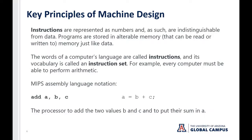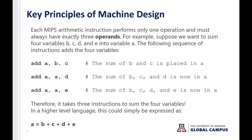So in this case: add A, B, C — the processor adds B and C and puts their sum into A. Each MIPS instruction performs only one operation and must have exactly three operands. For example, suppose we want to sum four variables B, C, D, and E and store the result into A. The following sequence of instructions accomplishes this: first add B plus C and store in A, then add A plus D and store in A, then add A plus E and store in A.